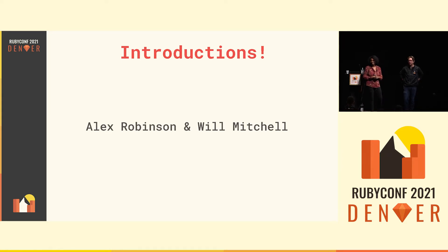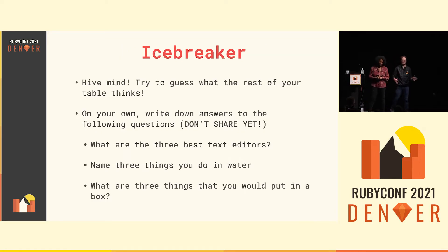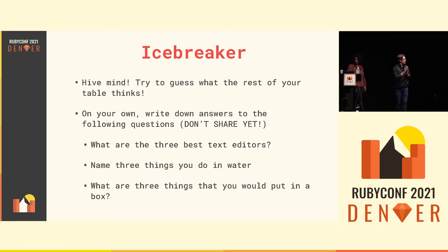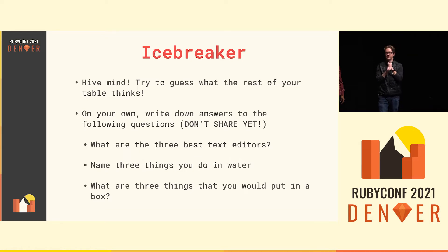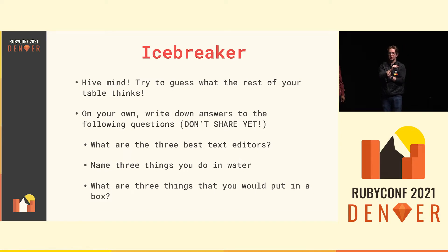How many Turing alums do we have in the room? Awesome, welcome! We're going to be doing a fair amount of interactive elements today. We'll start with an icebreaker called HiveMind. Find a group of three to four people. On your own, write down answers to the following questions — don't share them yet. First: what are the three best text editors? Second: name three things that you do in water. Third: what are three things that you would put in a box? Take two minutes. Go.